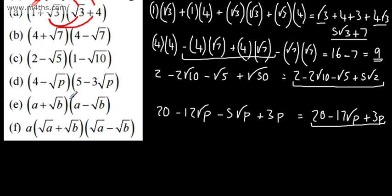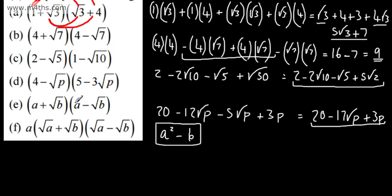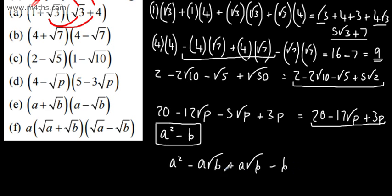Now the general form: (A + root B)(A - root B). This is the difference of squares — it's A squared minus B. Expanding to confirm: A times A is A squared; minus A root B; plus A root B; then minus root B times root B which is B. The two middle terms cancel, leaving A squared minus B. Note that A times root B and root B times A are the same thing, just written differently.